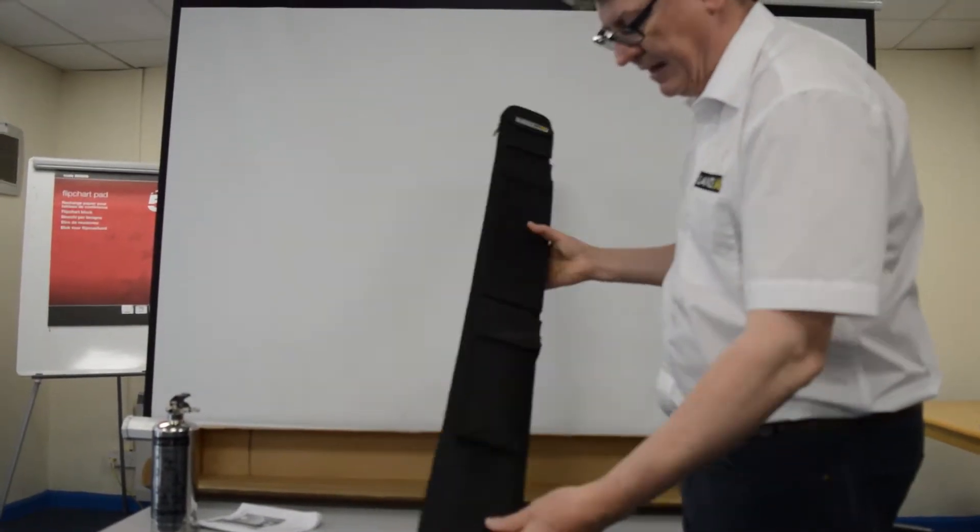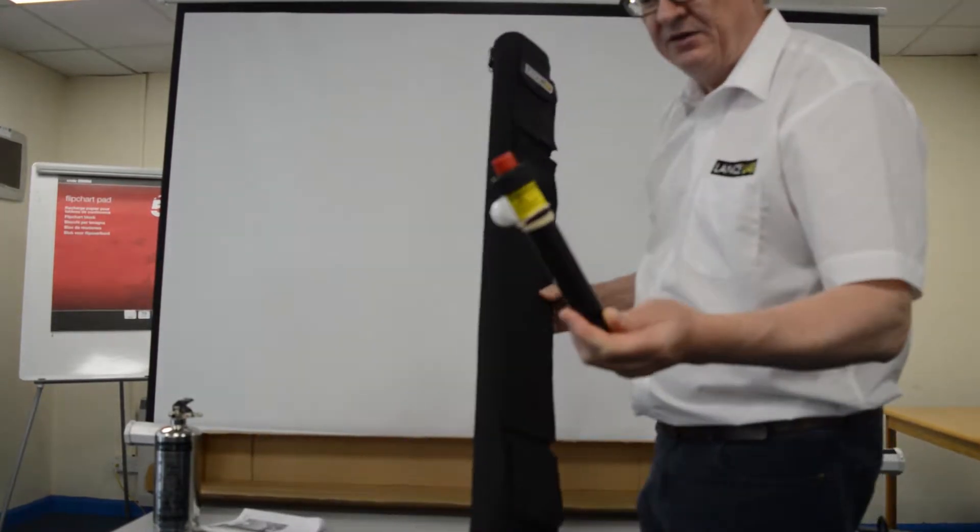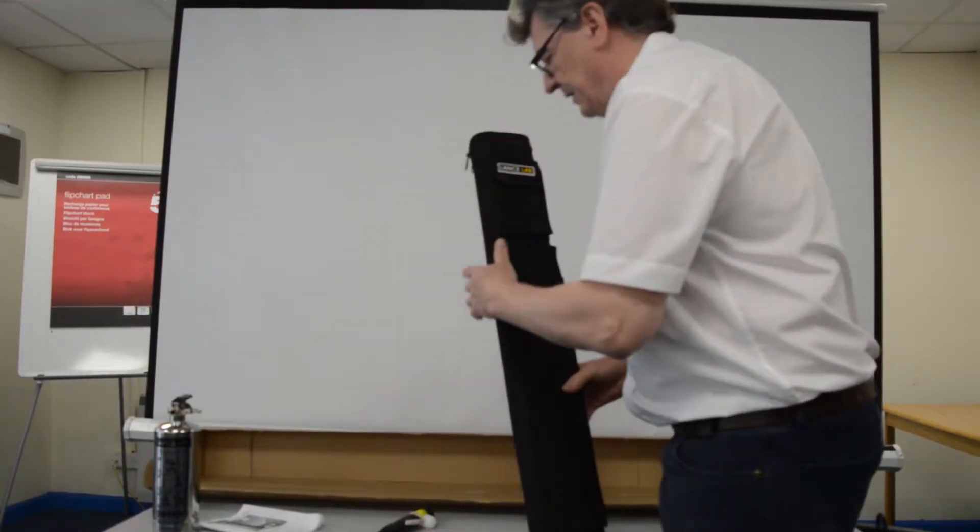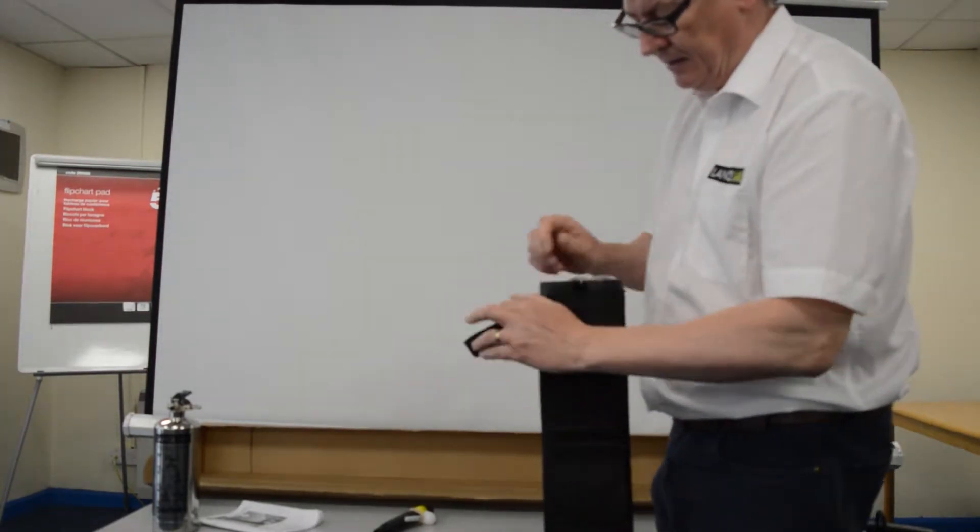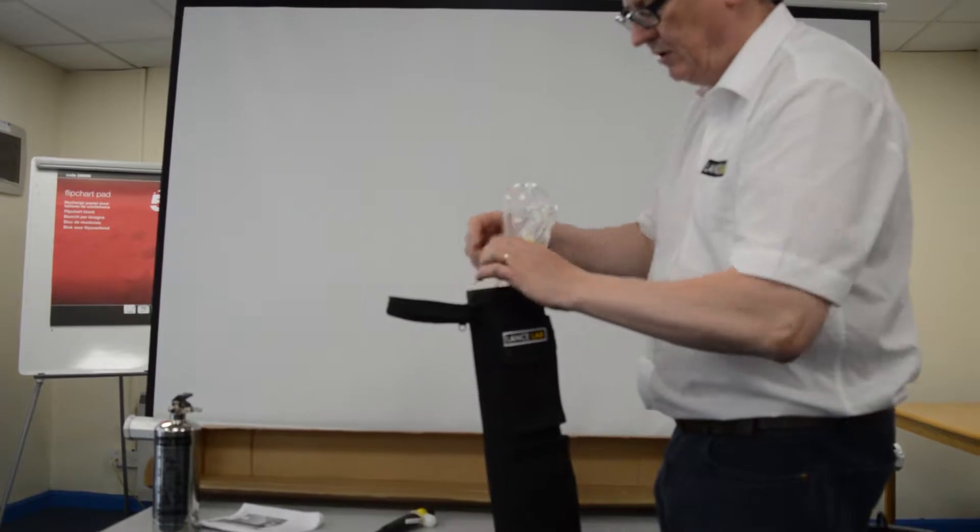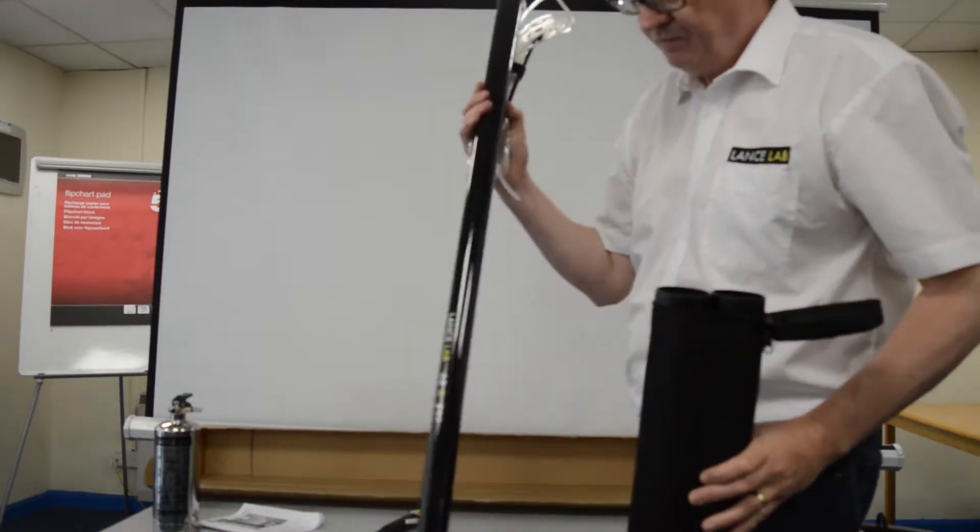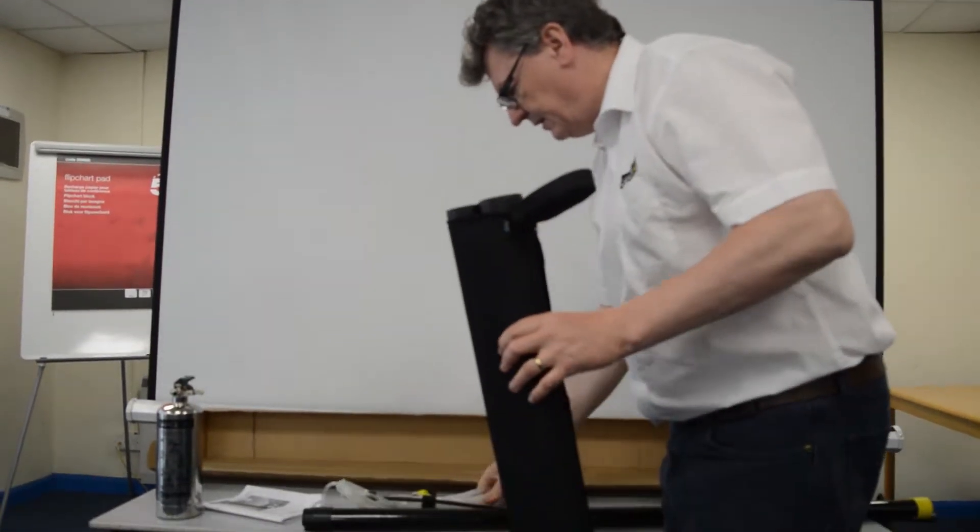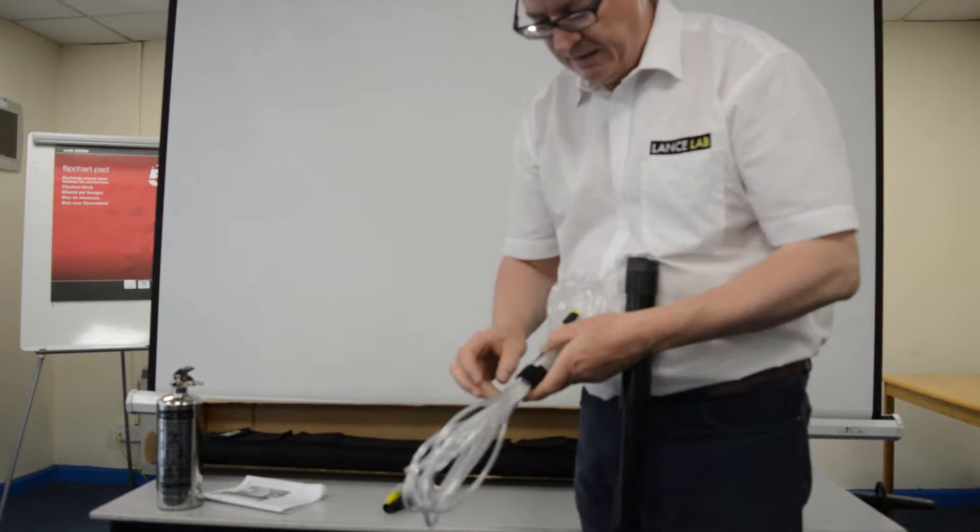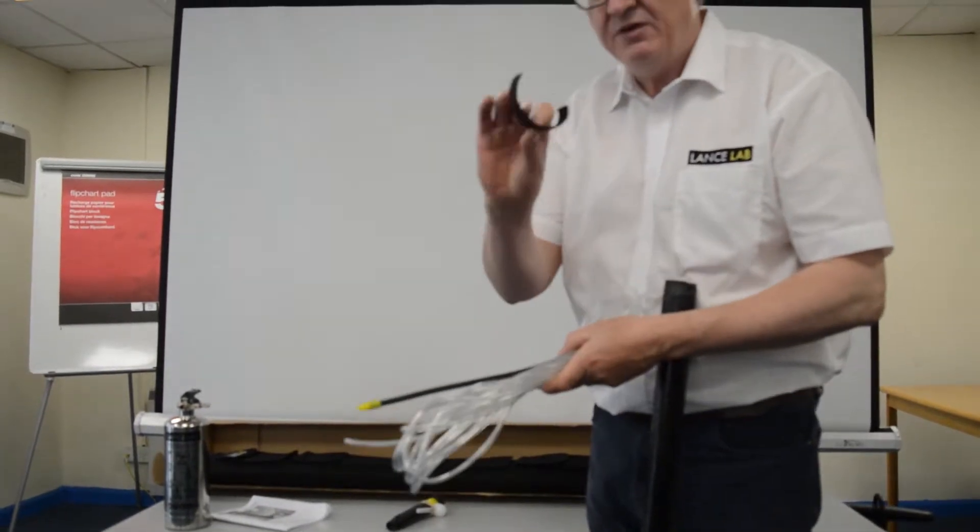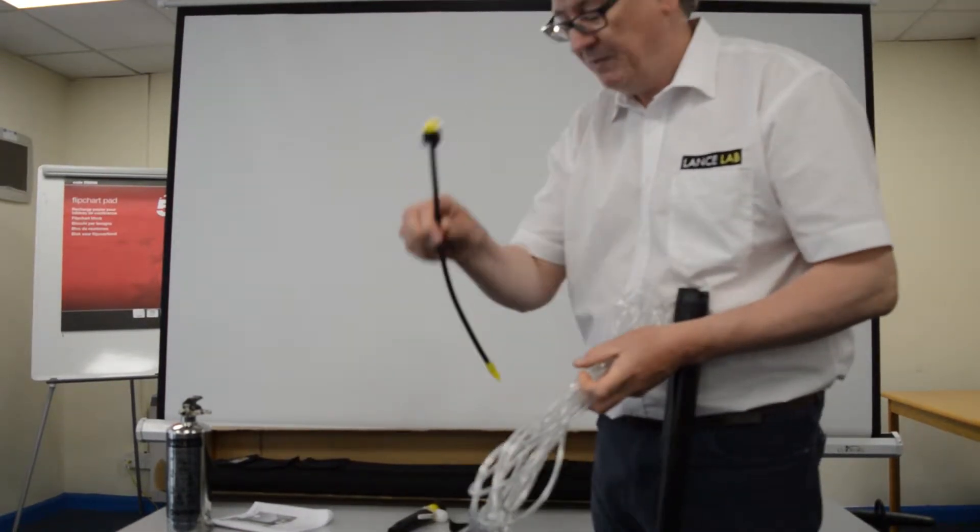This is the lance in the bottom pocket. We have the powder chamber and the scoop. Remove the lance from the carry case. Keep for reuse. Now this is the flexi tip for the powder chamber.